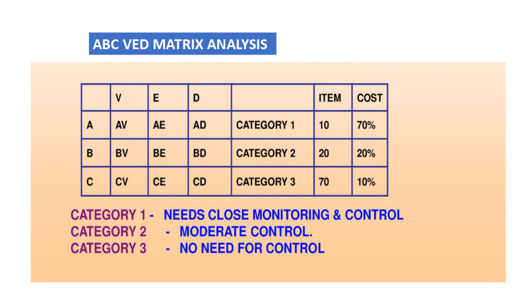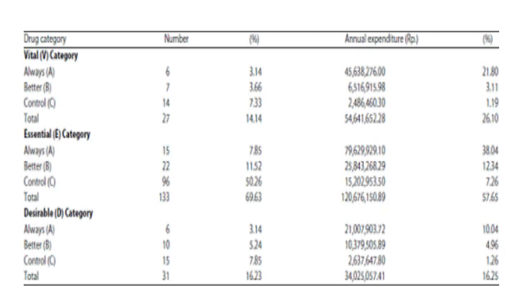These groups are categorized into Category 1, Category 2, and Category 3. Category 1 needs close monitoring and highest control, especially for drugs falling under both Group A and Group B. An example of ABC-VED matrix analysis is provided to illustrate this approach.